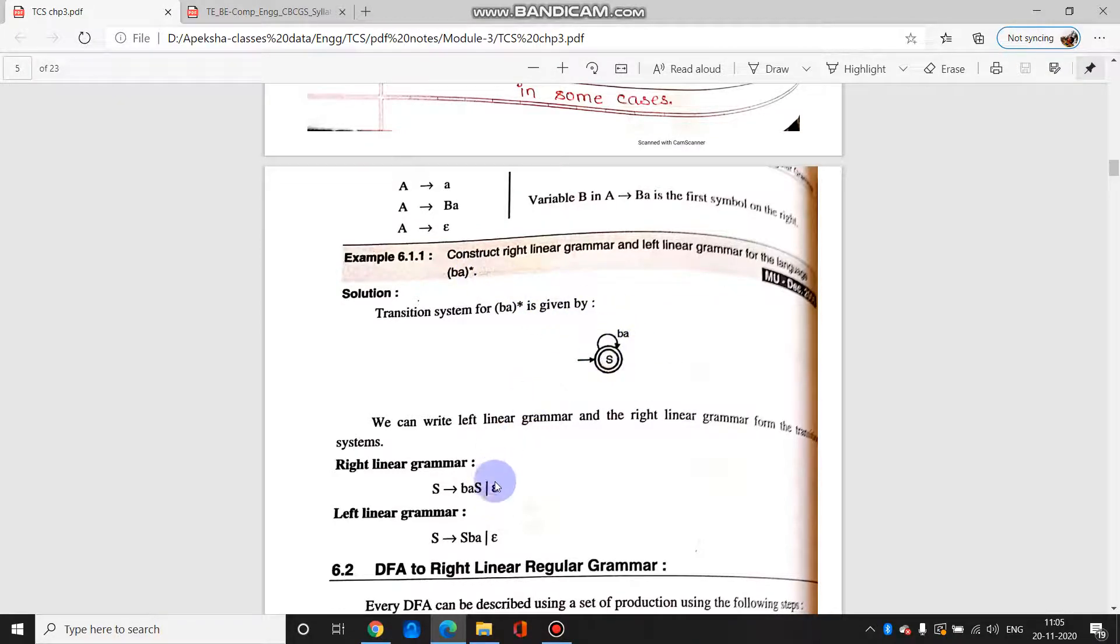Epsilon is included because of the star, which is closure. And for left linear grammar it will be like s b a, because left linear means this non-terminal symbol should be on the left. So it is giving s b a and it is a closure.